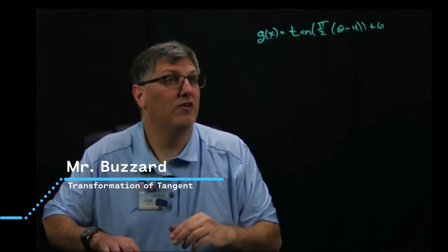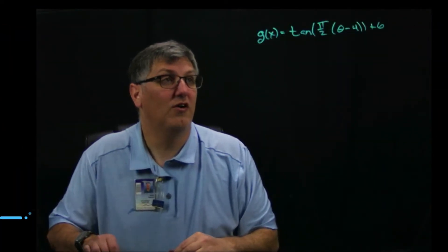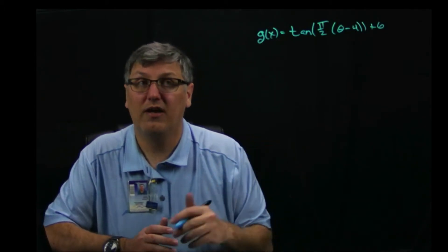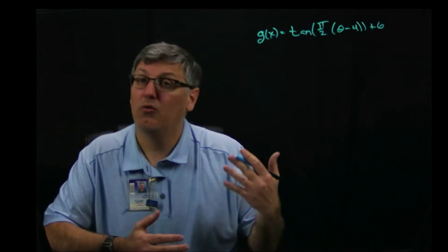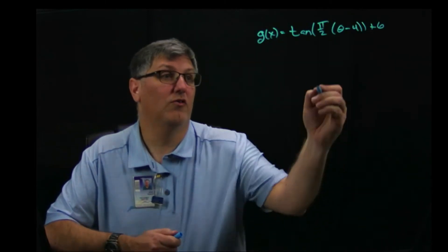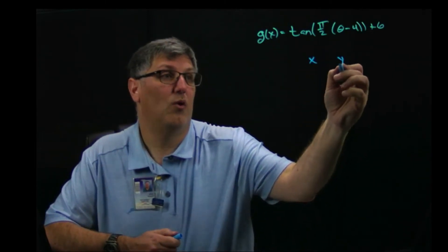All right, so I have an equation here: g of x equals tangent of pi over 2 times theta minus 4 plus 6. Well, from here, we're going to do our mapping like we always do, x, y.